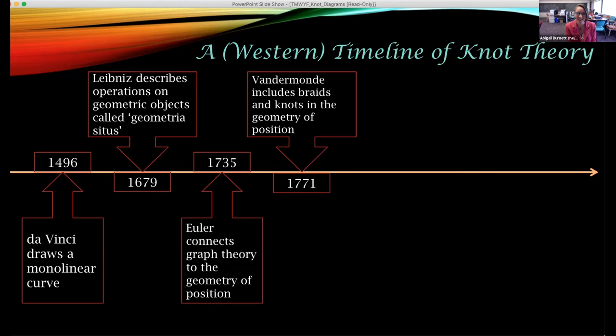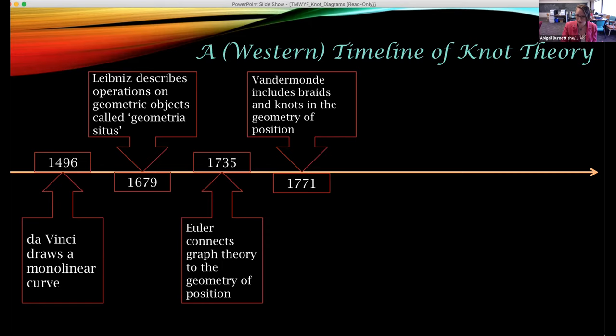It took until about the 1770s for people to connect what da Vinci had drawn to what Leibniz and Euler were talking about — the geometry of position — and say these are the same idea. Vandermonde was inspired by craftsmen braiding nets to catch fish: it didn't super matter how long your string was, it mattered whether your knot would come undone. That was the connection he made between Leibniz's geometry of position and what knot theory would become. Then in the 1830s, Gauss, who was studying the electromagnetism of volcanoes, gave us our first knot theory proof — he proved that two circles separated from each other are different from two circles that are linked together.